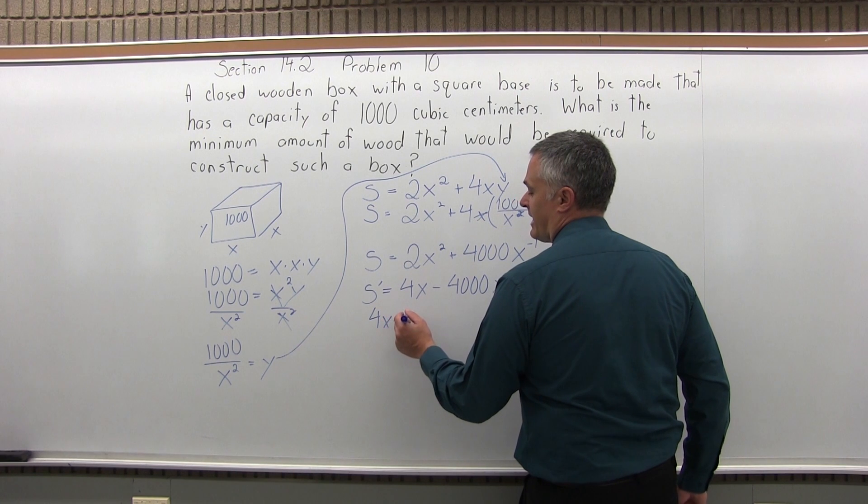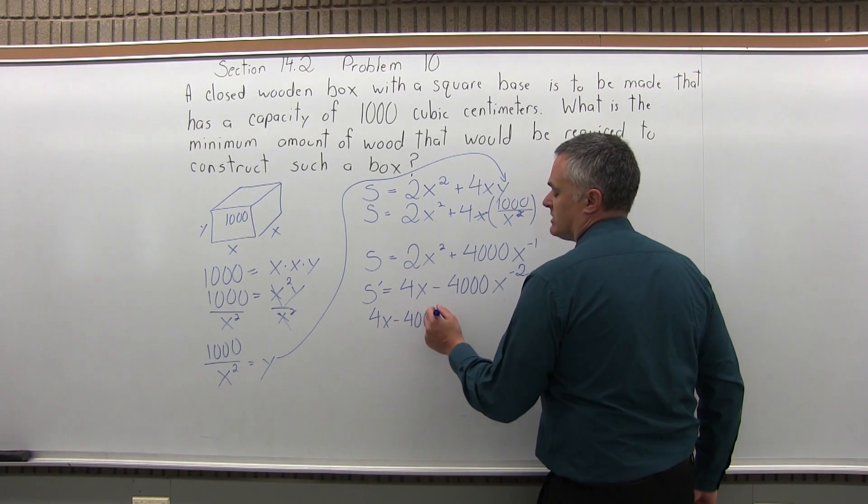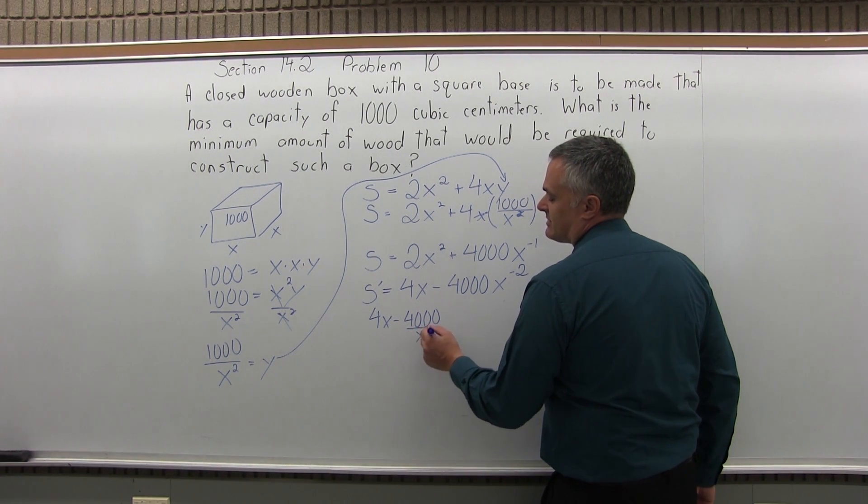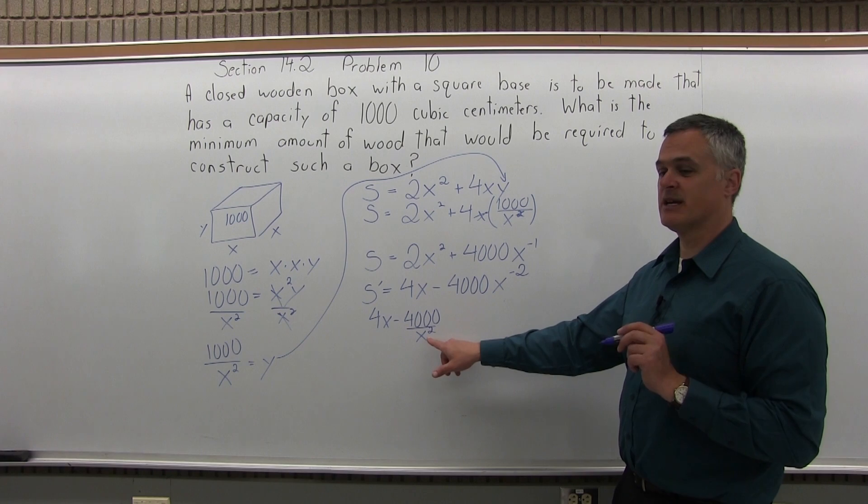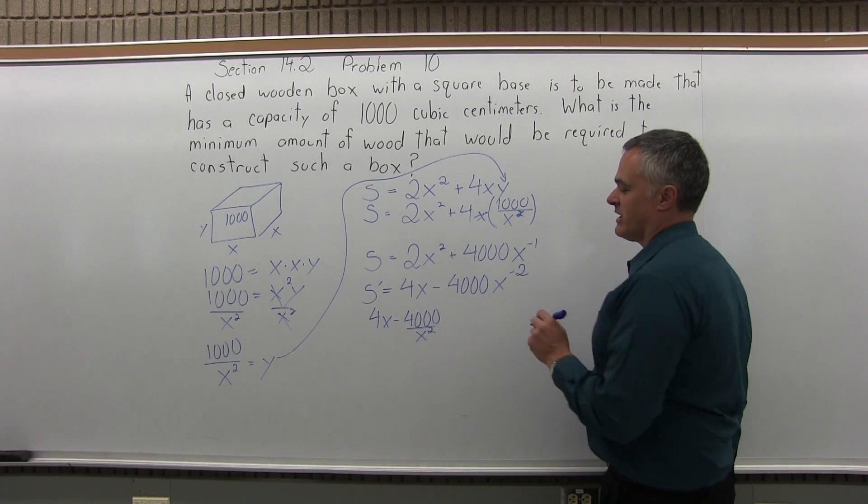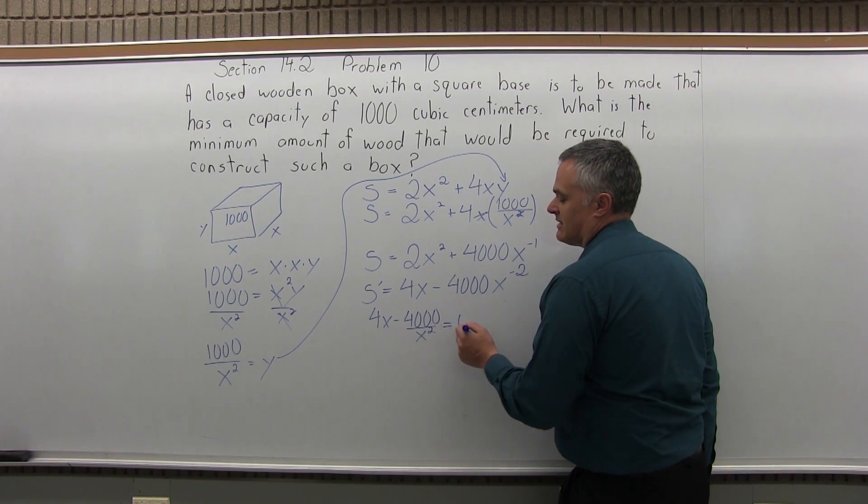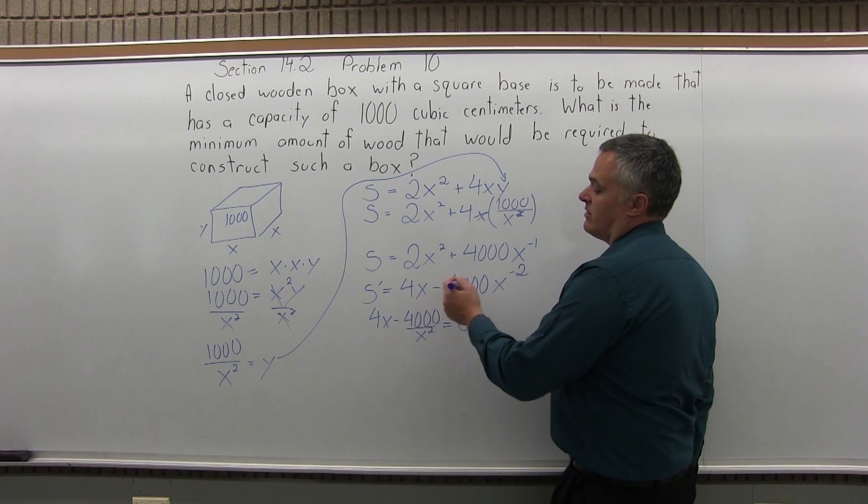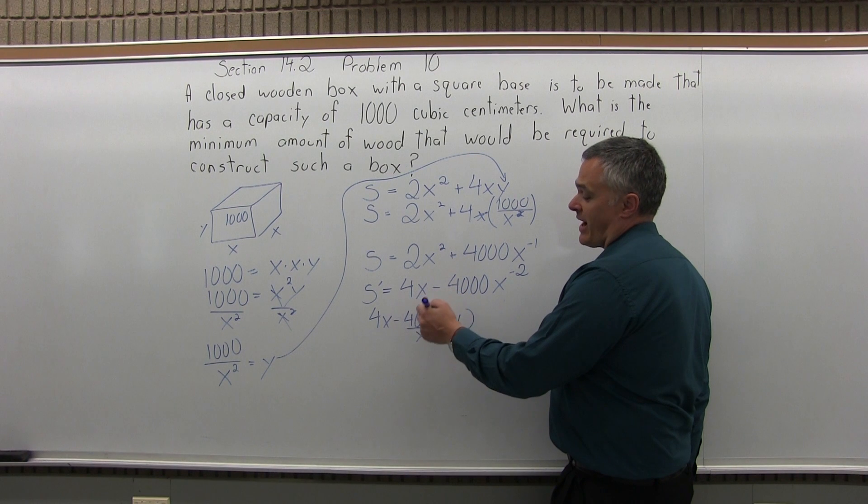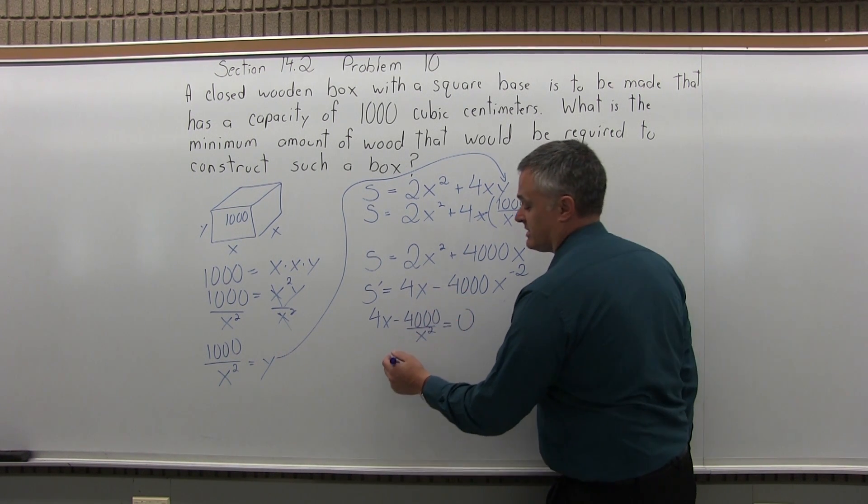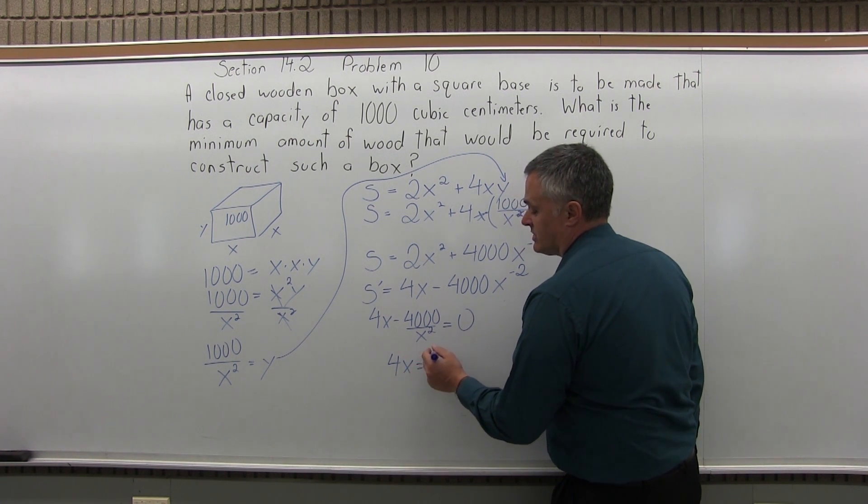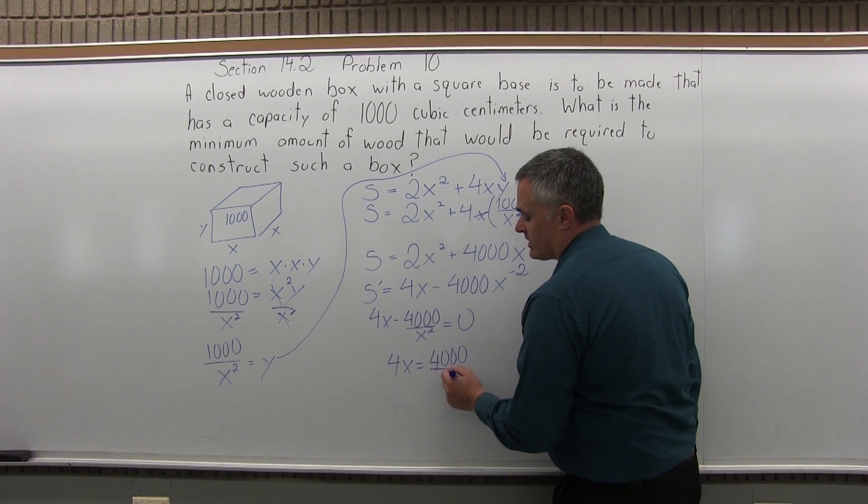So now I can set it equal to 0. So 4x minus 4,000, instead of x to the negative 2, let me write this as 4,000 over x squared. That's the same as 4,000x to the negative 2. Looks a little bit more natural like that. I'm going to say that that's equal to 0. So let me bring the 4,000 over x squared over to the right side of the equals and it'll make it positive. So I'll have 4x equals 4,000 over x squared.